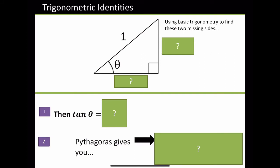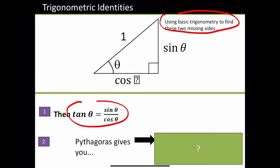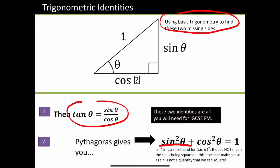Trigonometric identities. Use your basic trigonometry to find these two missing sides — sin θ and cos θ. Therefore tan θ will actually be sin over cos. Tan θ is simply sin over cos — you've probably seen this before, and you're going to be using it quite often. Using Pythagoras, if this is sin θ and this is cos θ, we can get sin²θ plus cos²θ equals 1. It's like saying a and b: c² equals a² plus b². That's all they've done.